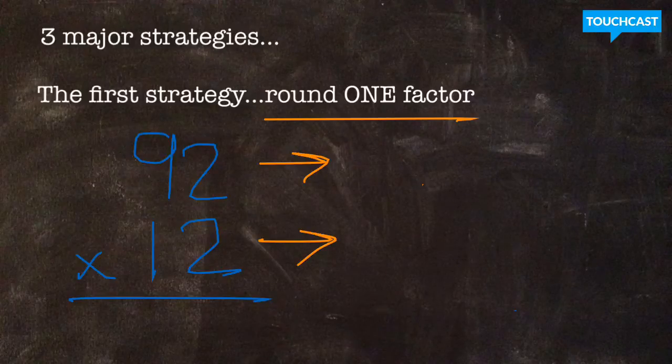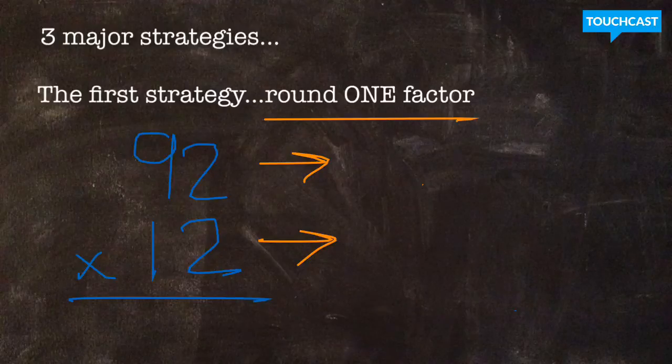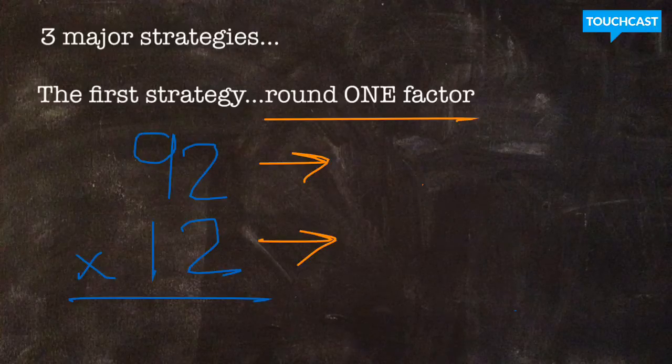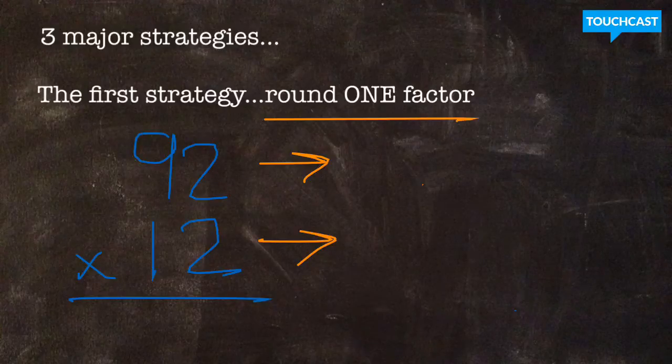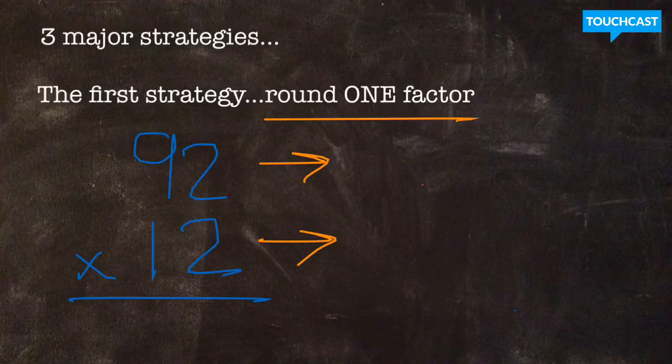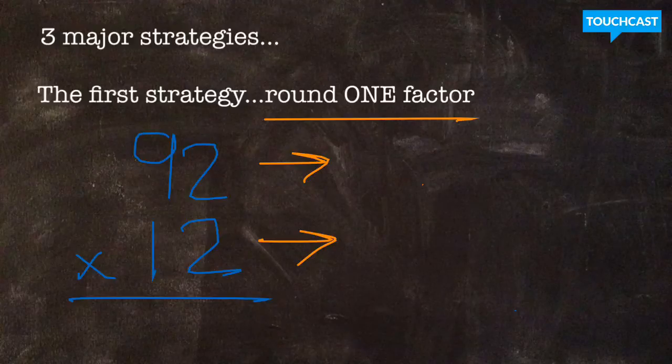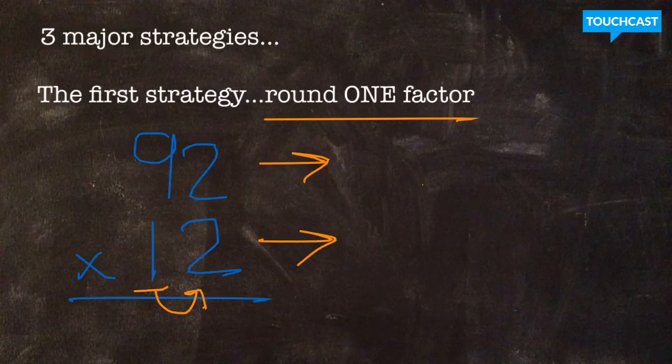If you're looking at this and saying, which factor do I choose, 92 or 12, my greatest hint to you is think about which factor you could round to make multiplication easier to do mentally. If I look at this quickly and say, I'll round 92 to 90 and leave 12 as it is, 90 times 12 is not something I can do easily mentally in my head. Now, if I look and say, I'm going to leave 92 the way that it is, and choose to round 12 down to 10.